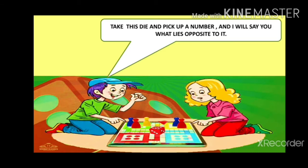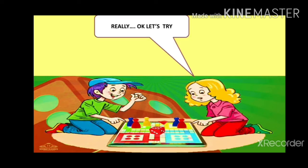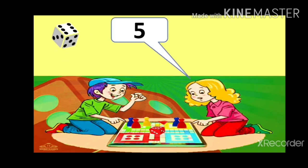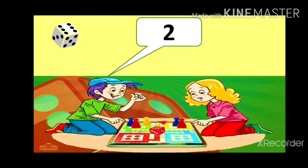Hello friends. Johnny and Ginny were having a game of Ludo. Johnny said, 'You take this die and pick up a number and I will say what lies opposite to it.' Ginny thought, 'Really? Okay, let's try then.' Ginny called out the number 5. Johnny immediately responded 2. Ginny said 6 and Johnny said it's 1. Ginny thought: how is it possible — without seeing, how is he able to know what is on the opposite?